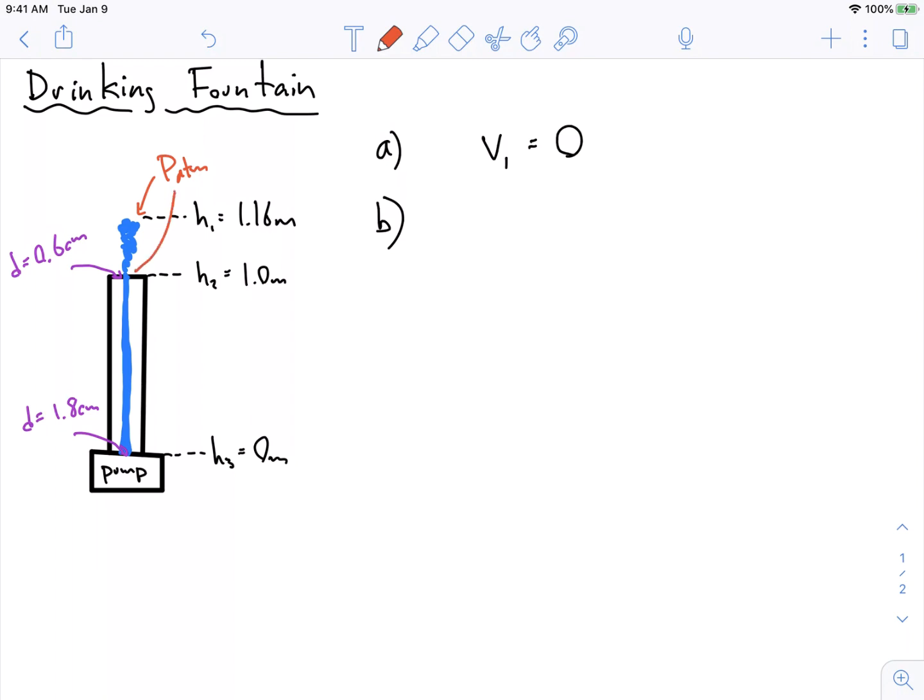We also know that we have atmospheric pressure down here at point 2. The fluid, as soon as it leaves the confined space, is just water molecules in free fall, flying up in the air and flying back down, like projectile motion. The pressure on all that is just atmospheric pressure.